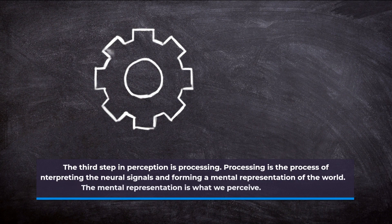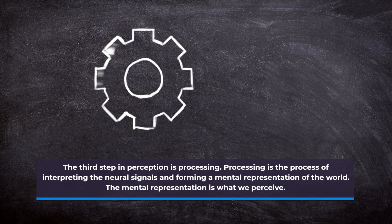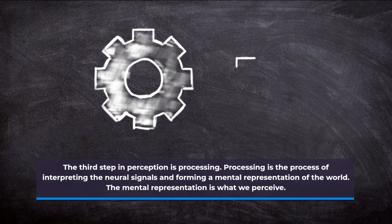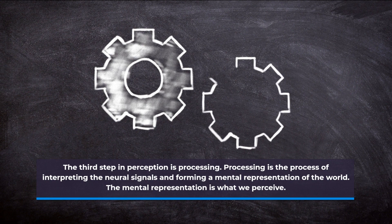The third step in perception is processing. Processing is the process of interpreting the neural signals and forming a mental representation of the world. The mental representation is what we perceive.